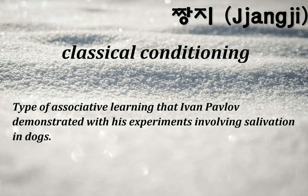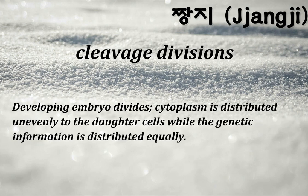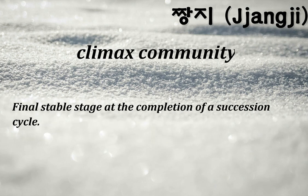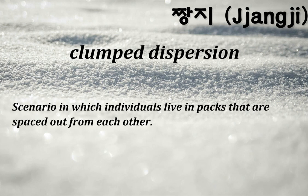Classical conditioning: a type of associative learning that Ivan Pavlov demonstrated with his experiments involving salivation in dogs. Cleavage divisions: the developing embryo divides; cytoplasm is distributed unevenly to daughter cells while genetic information is distributed equally. Cleavage furrow: a groove formed in animal cells between the two daughter cells; this groove pinches together to complete the separation after mitosis. Climax community: the final stable stage at the completion of a succession cycle. Clump dispersion: scenario in which individuals live in packs spaced out from each other.